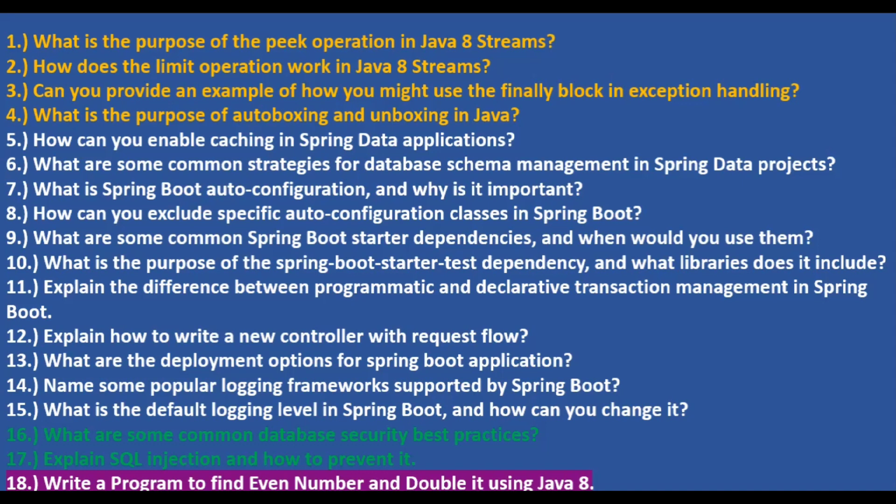How does the limit operation work in Java 8 streams? The limit operation restricts the number of elements in the stream to the specified maximum size. For example, if you have a stream with 1000 elements and you want only the first 500, you can use the limit operation, and it gives you a new stream.